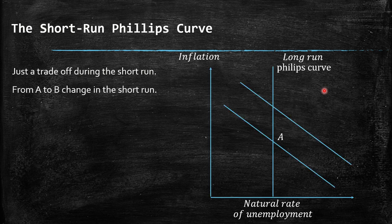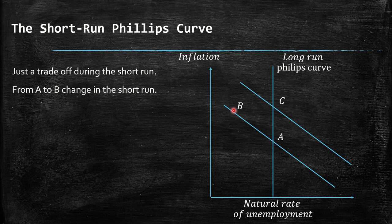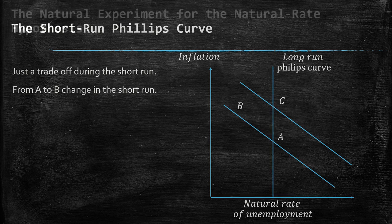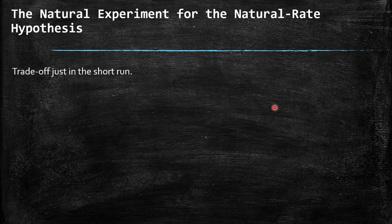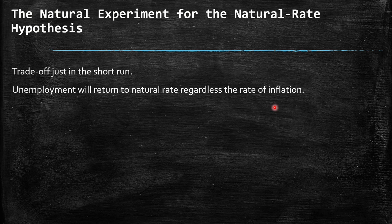In the representation of the long-run Phillips curve and the short-run curve, when we face a shift from one short-run curve to another, we can express a move from point A to point B in the short run — higher inflation, lower level of unemployment. But if nothing else changes, at the end of the day, we are going to have point C: the same level of inflation but a higher level of unemployment. Basically, unemployment will return to the natural rate regardless of the rate of inflation.